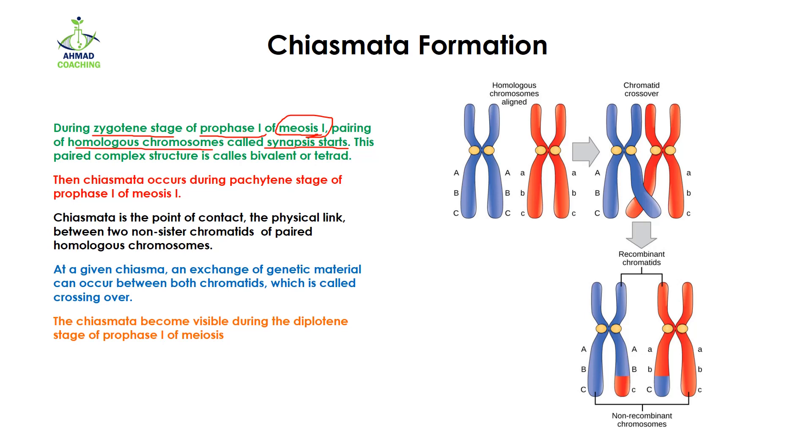Now the synapsis has occurred. Synapsis means the pairing of homologous chromosomes. These are the homologous chromosomes which are aligned with each other side by side. This structure is known as bivalent or tetrad. Bivalent means 1 and 2, and when we talk about tetrad, it means 1, 2, 3, 4. They have 4 structures, that's why we are calling it tetrad.